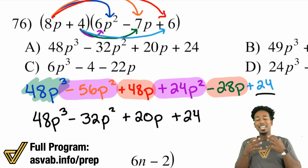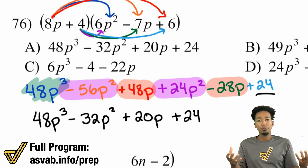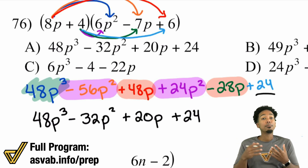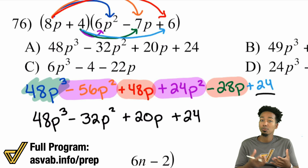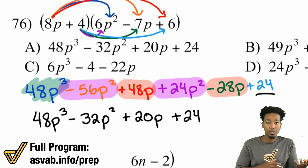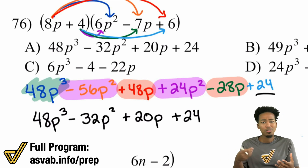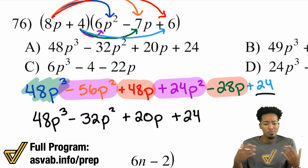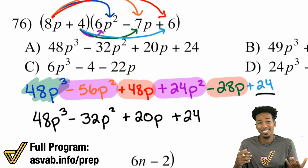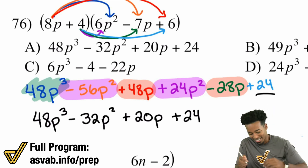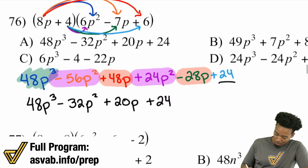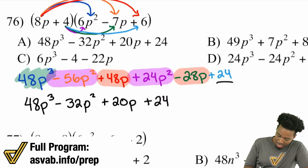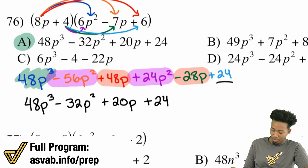There's our final answer: 48p³ minus 32p² plus 20p plus 24. Remember, the idea doesn't change — the distributive property is all about making sure everything from one parentheses multiplies with everything from the other. Once you get used to it, you'll move fast and might not even need to write all these steps out.